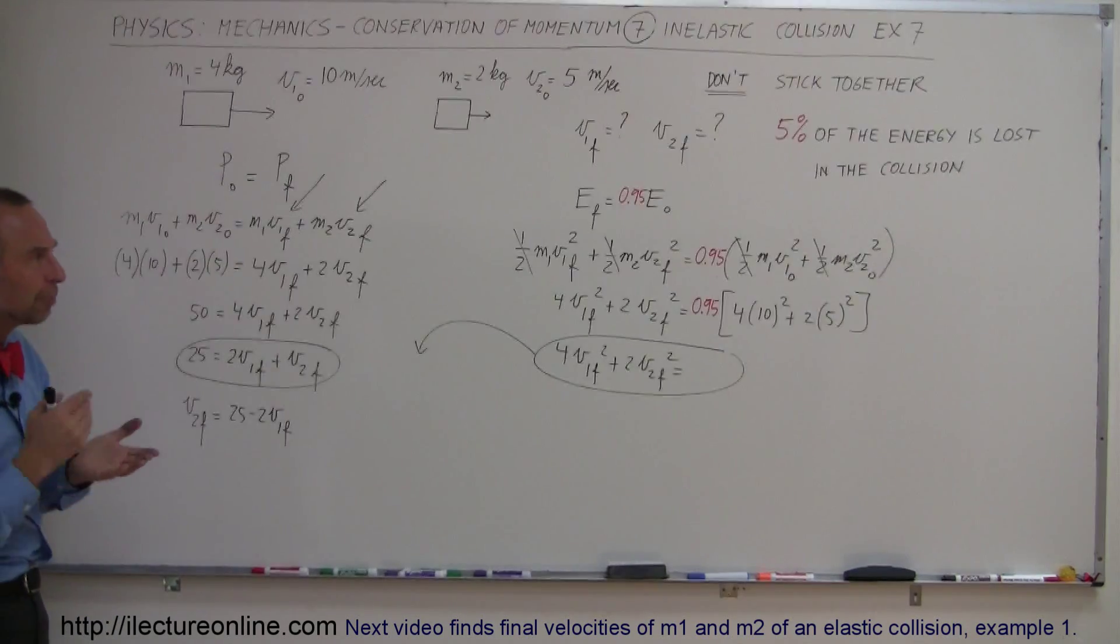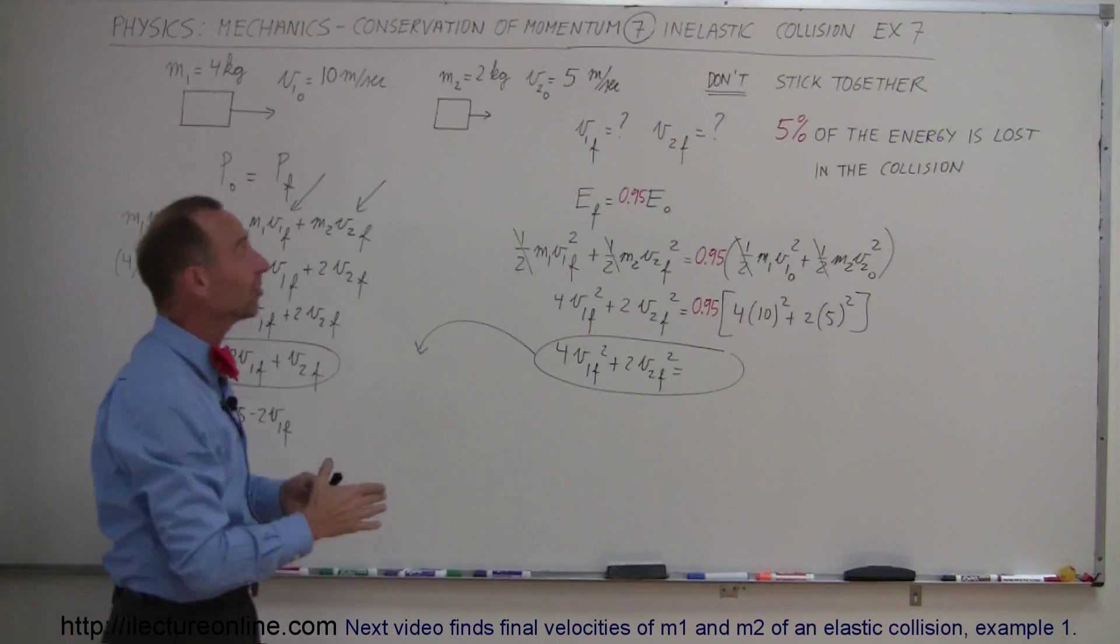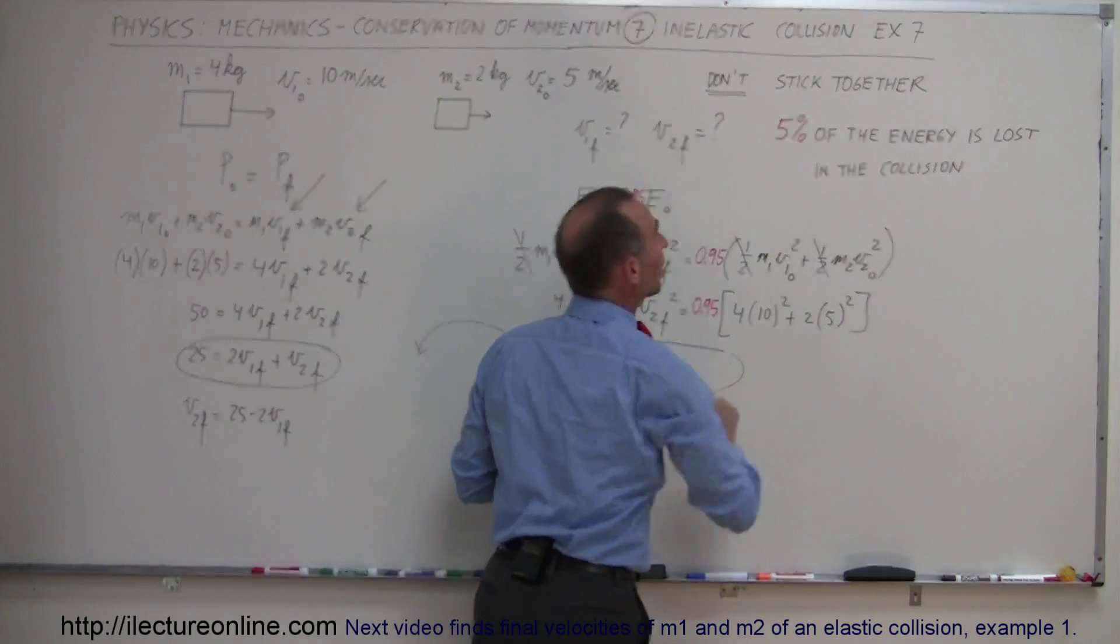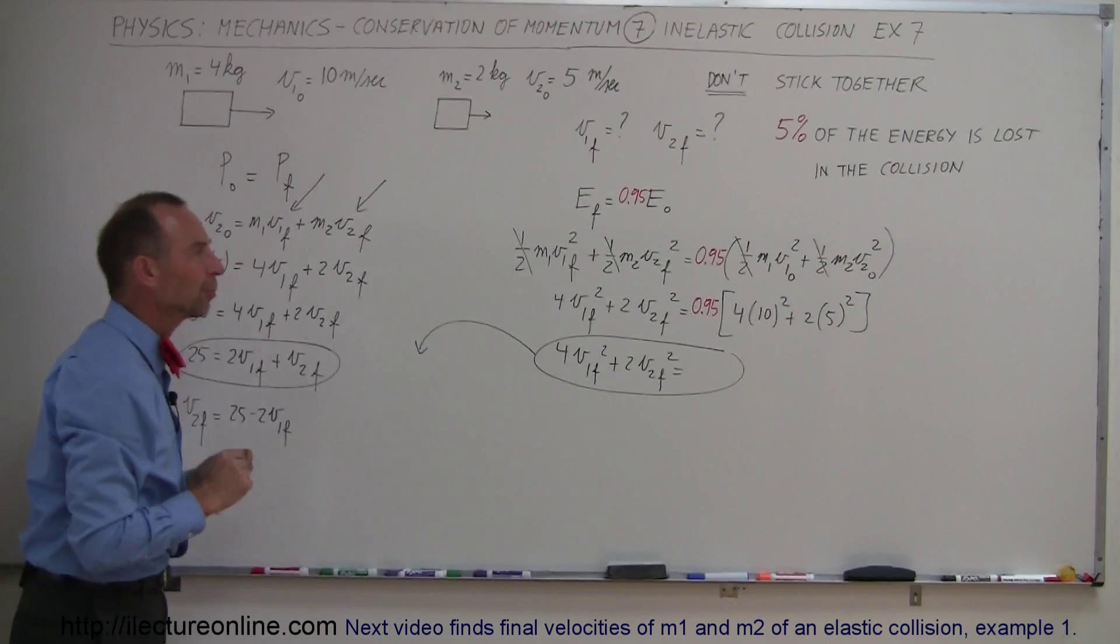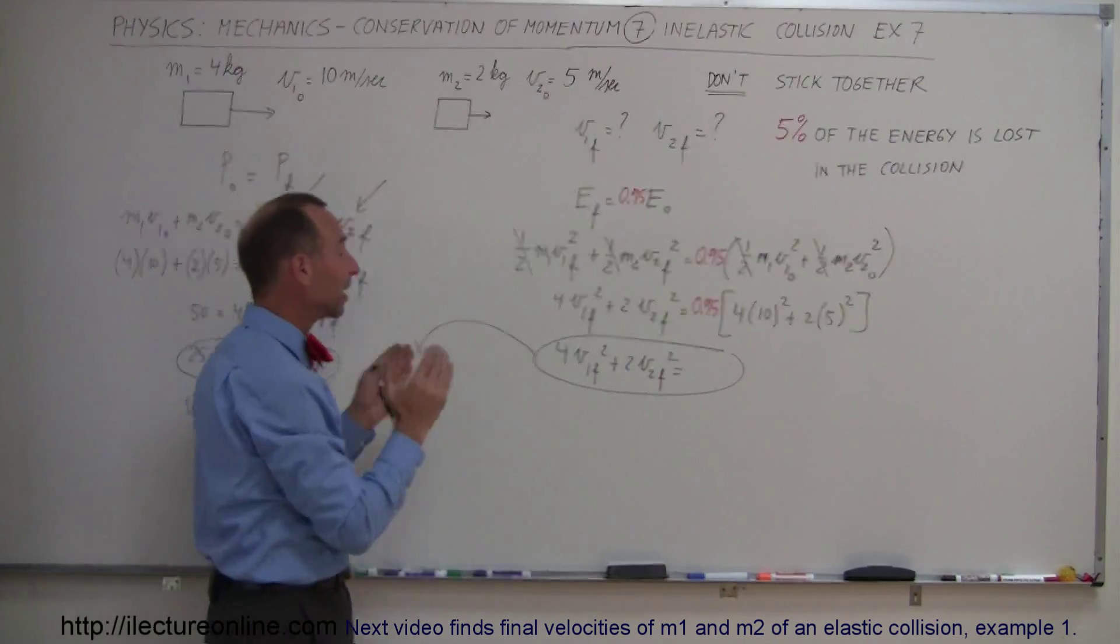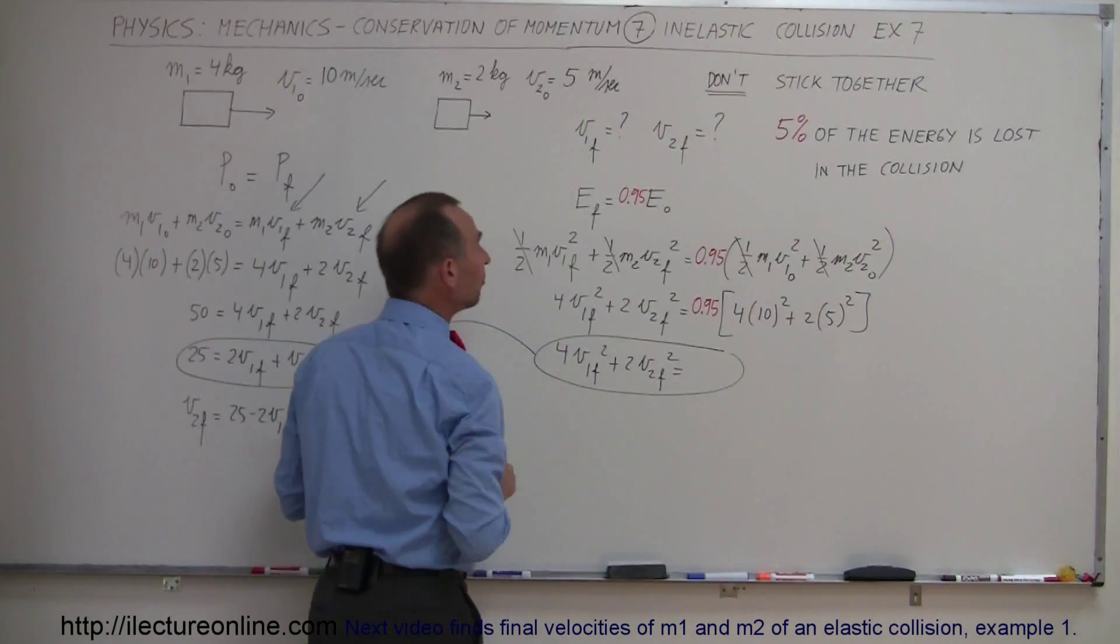But if they also tell you that part of the energy is lost, in this case let's say that 5% of the energy is lost in the collision, we should be able to solve this problem because then we can come up with a second equation that relates V1 and V2 together.